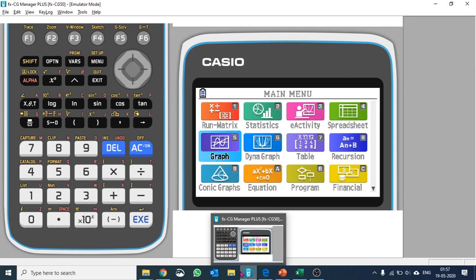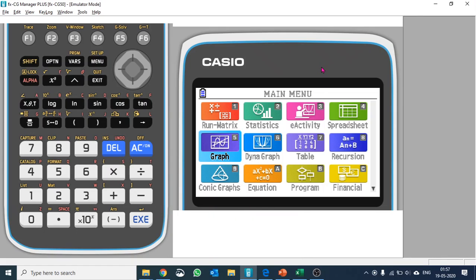Basically, we'll try to understand what happens when you change the coefficients. So let's say we're talking about the straight line equation y equals mx plus c.